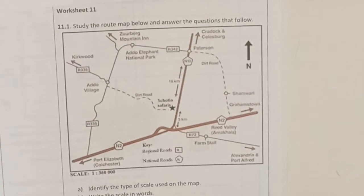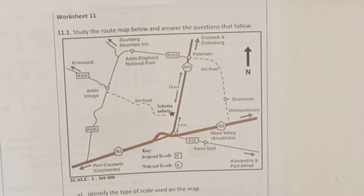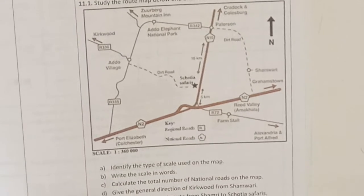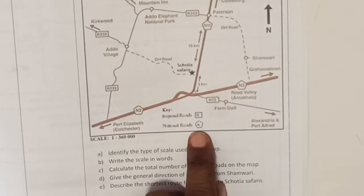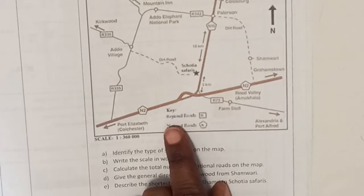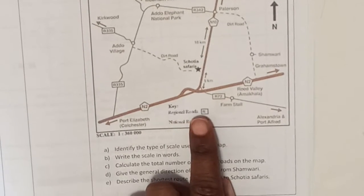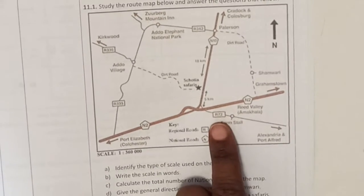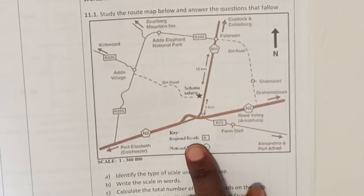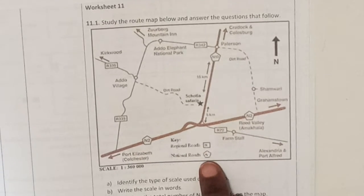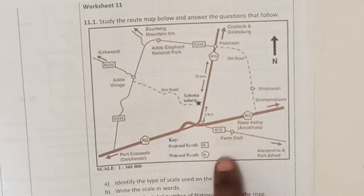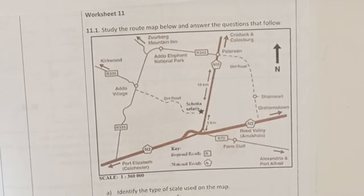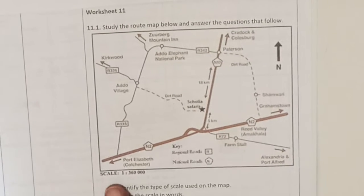Look at the codes given in the map. For example, they show national roads with a four-sided shape with an N inside. For regional routes, they show a square with an R inside. So when you see an R with a number, that's a regional route, and N with a number — like N2 — is a national route.